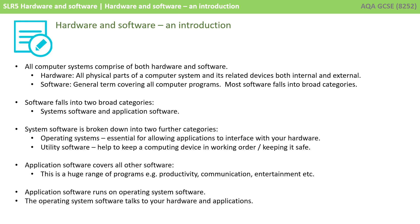To recap: all computer systems comprise both hardware and software. Software falls into two broad categories — system software and application software. System software is broken down into operating systems and utility software. Application software runs on the operating system, and it's the operating system itself that talks to your hardware and provides the interface between the two.